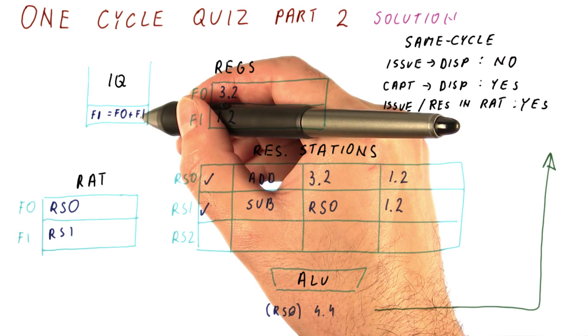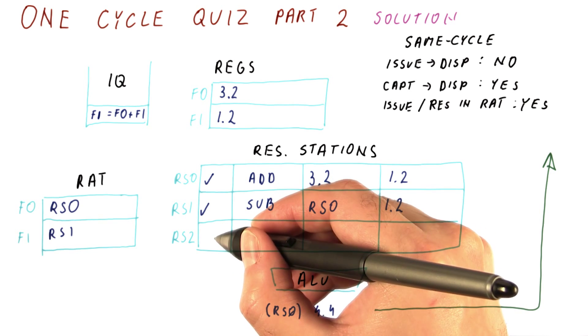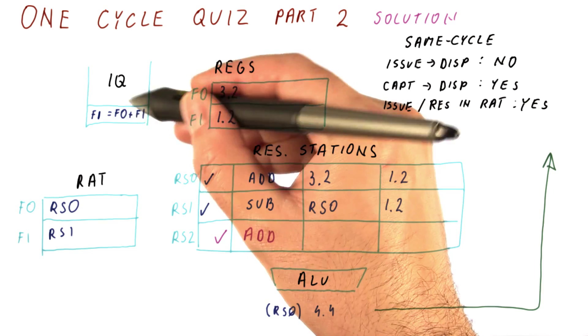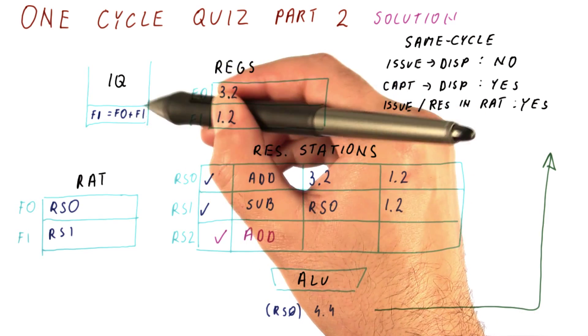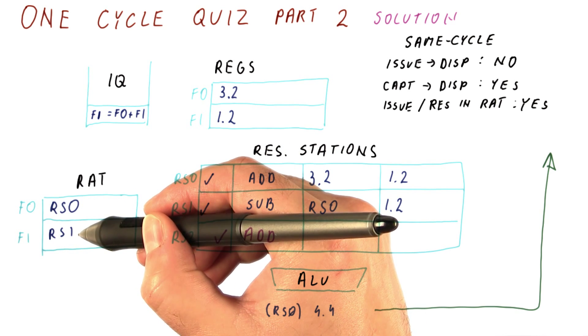When we are issuing, we're going to look for a free reservation station. There is one. So this reservation station becomes occupied. This is an add instruction, so we put add here. And it adds F0 and F1. Then we consult the RAT here to check what we're going to do.